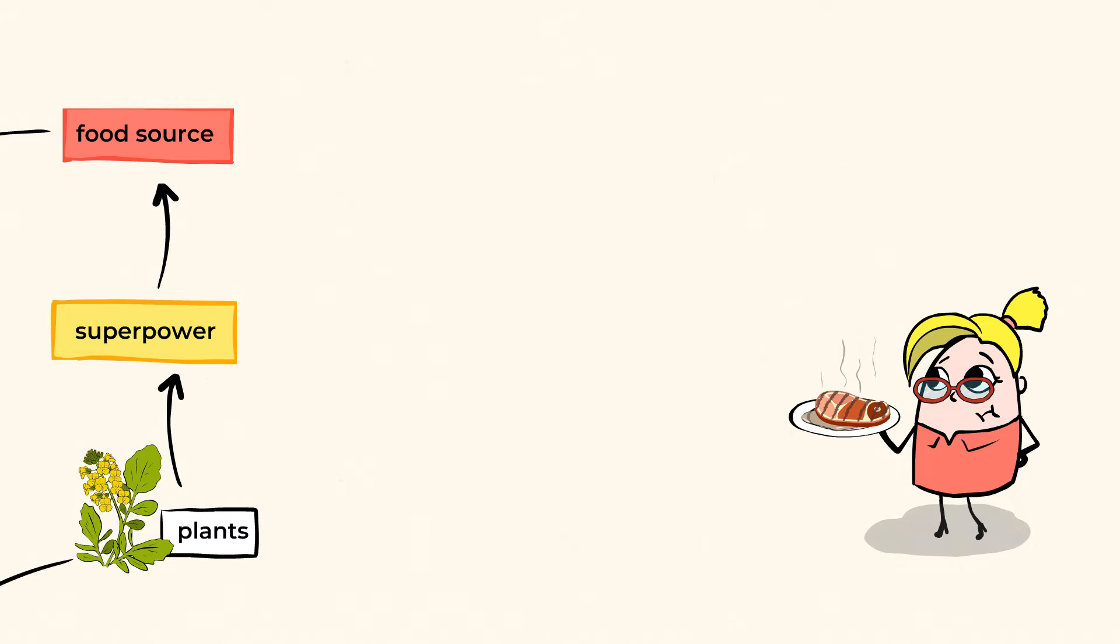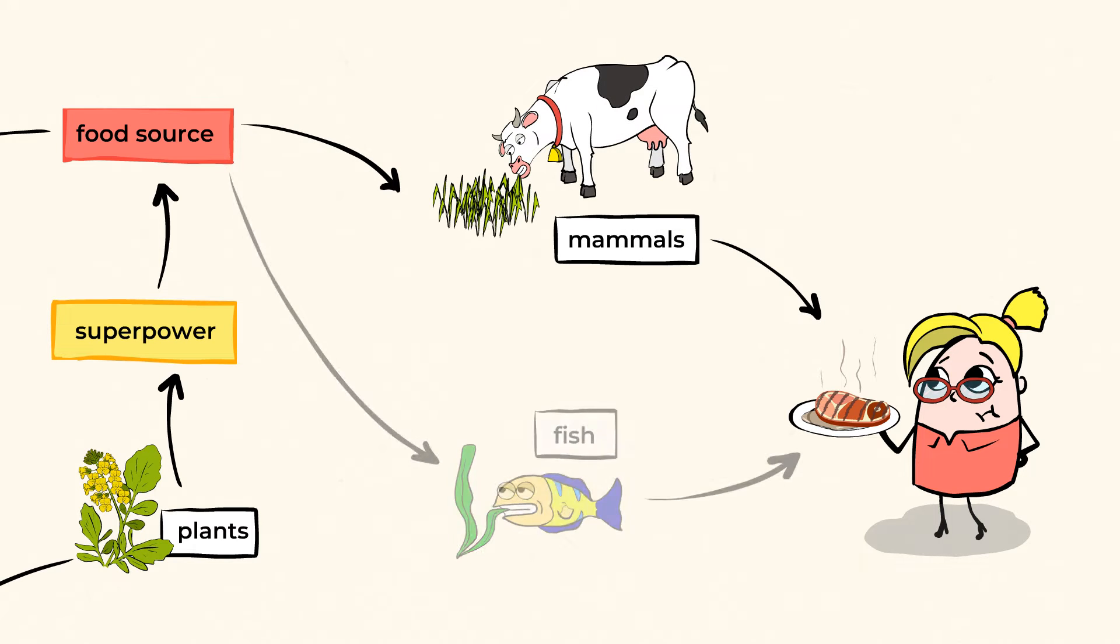If you eat meat, then plants provide food sources for these mammals and fish to eat and survive.